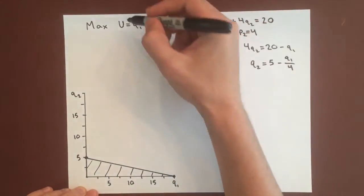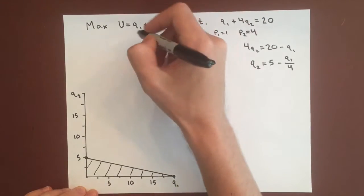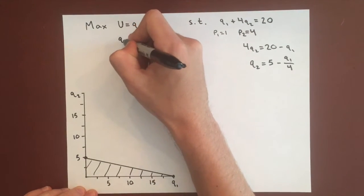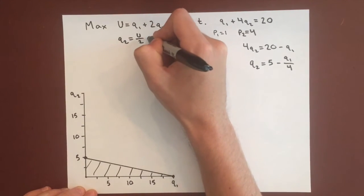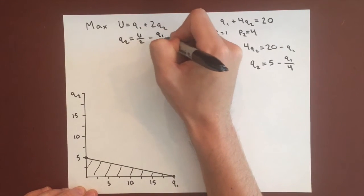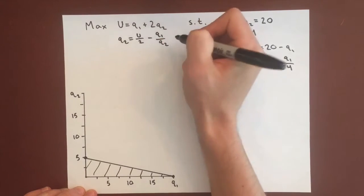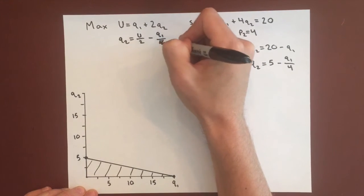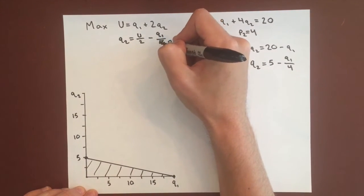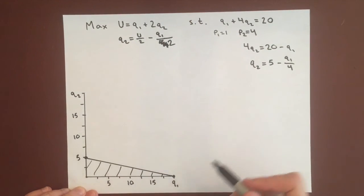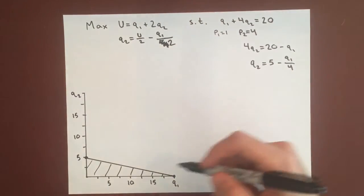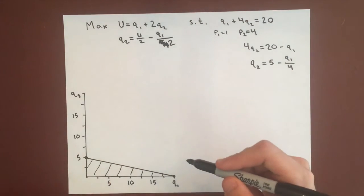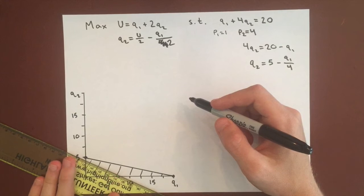Let's graph this utility function which is the same as last video. It turns out to be U over 2 minus Q1 over 2, or Q2 equals U over 2 minus Q1 over 2. This has a slope of negative 1 over 2, so we can draw these lines.